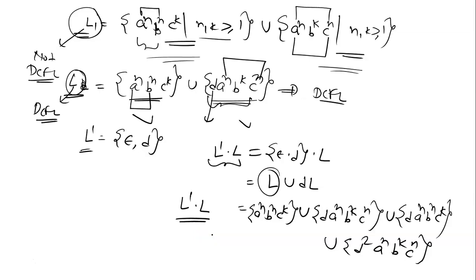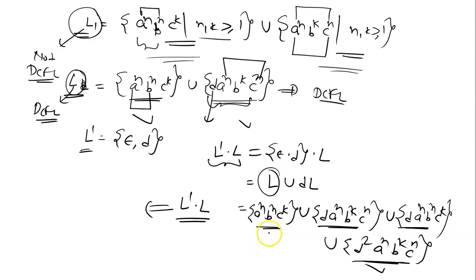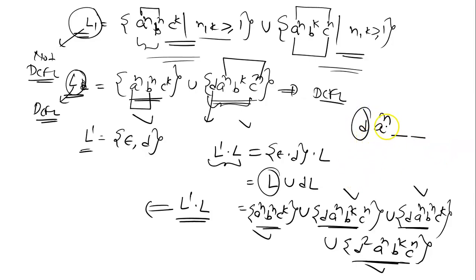This combined language L' · L is not DCFL. You can see it has four parts. If the string starts with d², it belongs to the last part. If the string does not start with d, it belongs to the first part. But if the string starts with exactly d, we don't know whether to check this or that — we don't know whether to match a^n with c^n or with b^n.